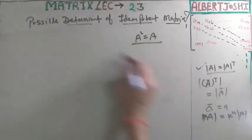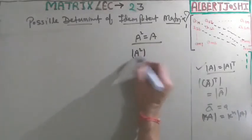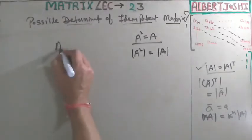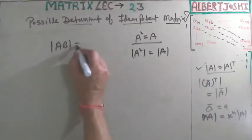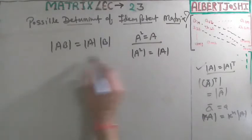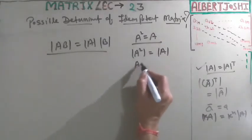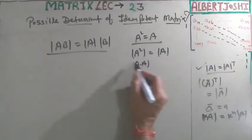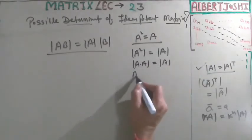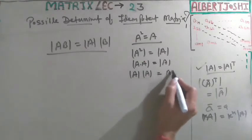So now we are finding the determinant. We will take the determinant of both sides. According to the property of the determinant, you must note that det(AB) is equal to det(A) times det(B). So applying this property to A times A, we get det(A) times det(A) is equal to det(A).